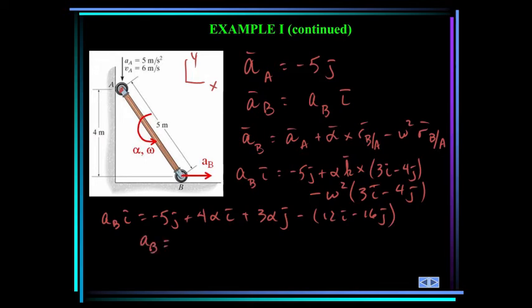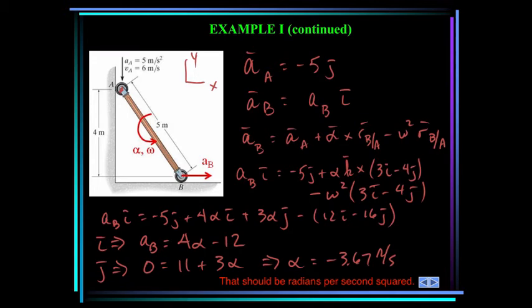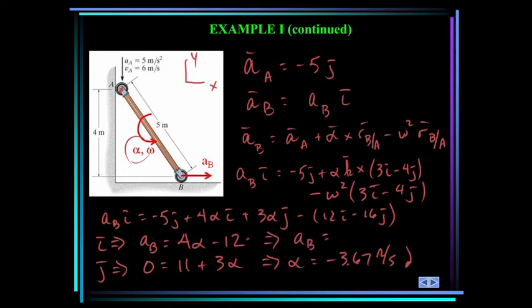Equating I components: acceleration of B equals 4 alpha minus 12. Equating J components: 0 equals negative 21 plus 3 alpha, giving alpha equal to minus 3.67 radians per second squared. It came out negative — we assumed alpha counterclockwise, so alpha is actually clockwise. Substituting into the I equation gives the acceleration of B equal to minus 26.7 meters per second squared. Since it's negative and we assumed positive to the right, acceleration of B is directed to the left.